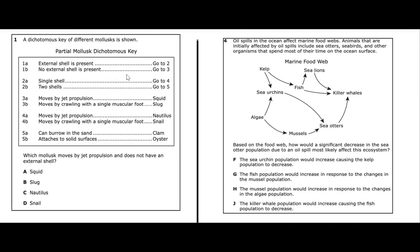Since the organism does not have an external shell, we go to step three, where we have two choices: moves by jet propulsion, or moves by crawling with a single muscular foot. The question asks which mollusk moves by jet propulsion — that is going to be the squid. So the answer to question one is the squid.